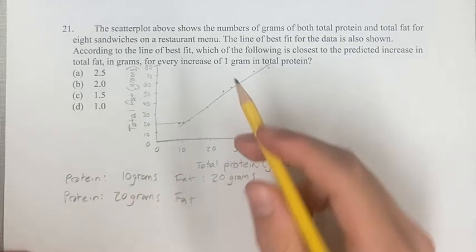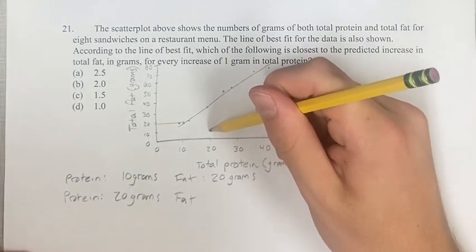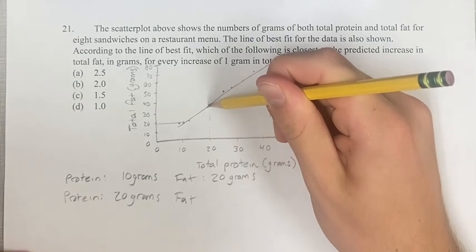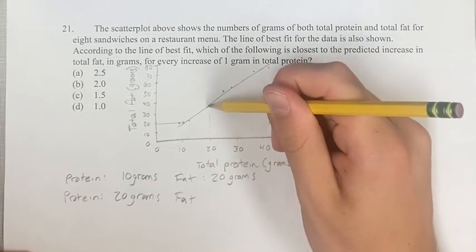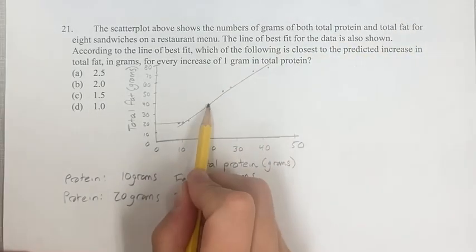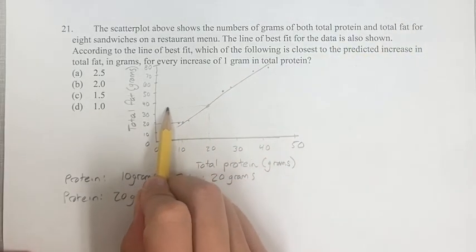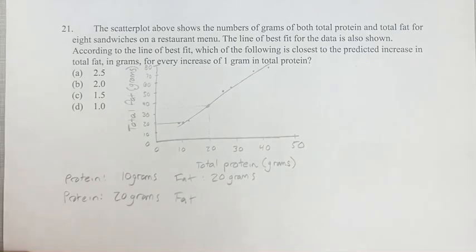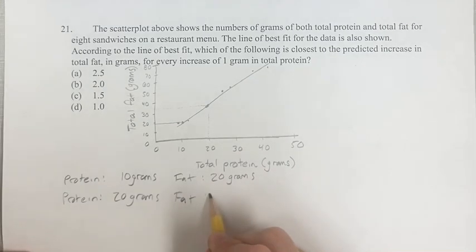When the protein is 20 that is going to correlate to this point right here again where the line has the point x equals 20, and then finding the y value of that, halfway between 40 and 30, let's call it 35 grams.